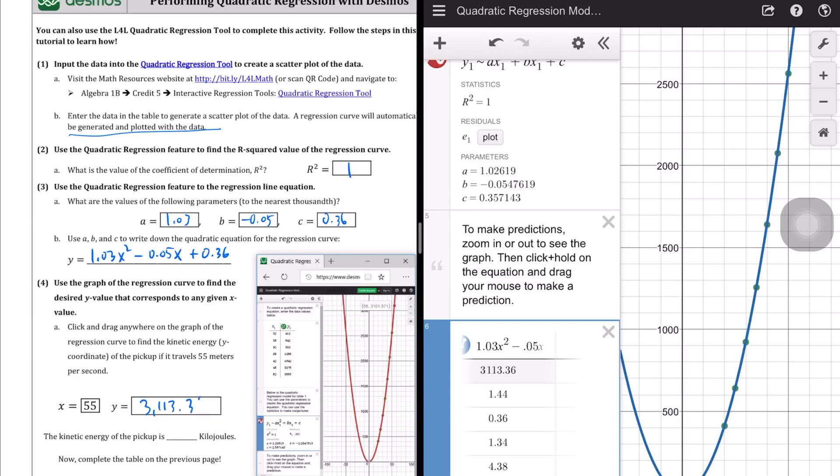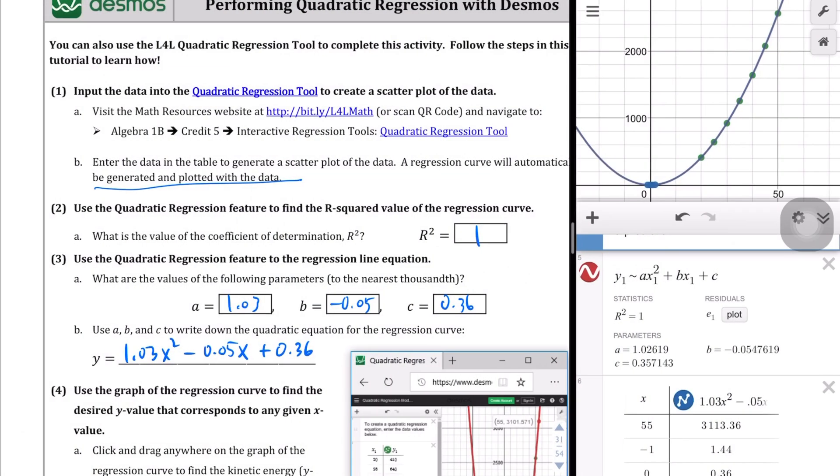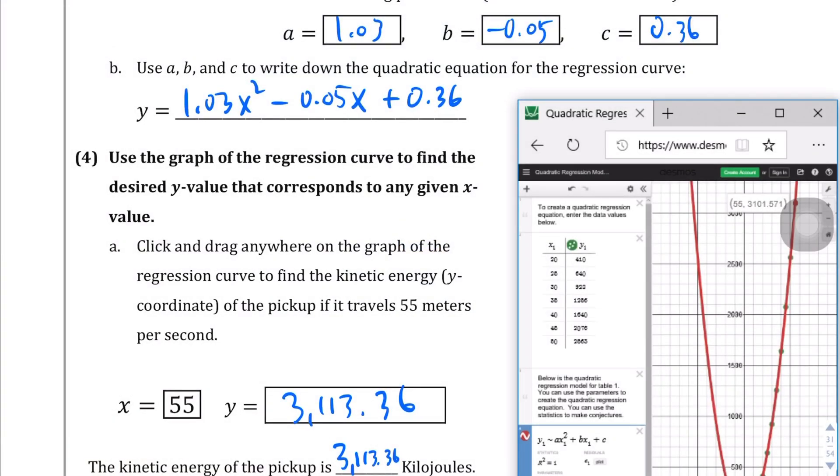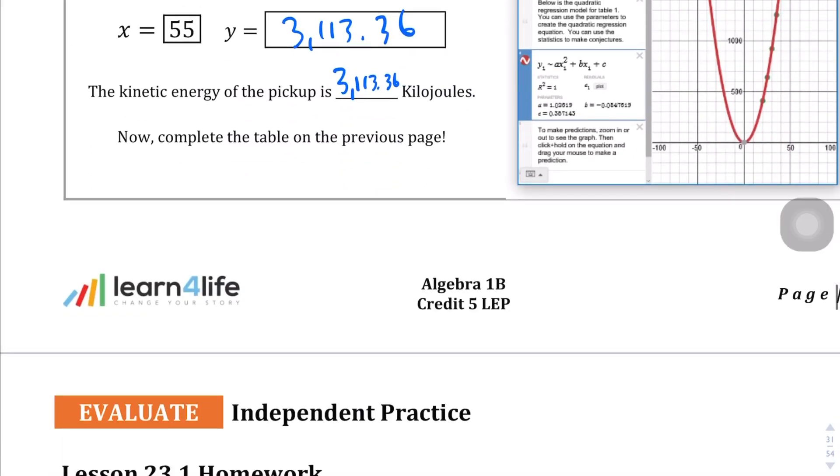3,113.36. So based on the, we didn't really even talk about the context, we should have, but based on our equation here, the kinetic energy of the pickup is at 3,113.36 kilojoules. And that's how you use the regression tool on Desmos.